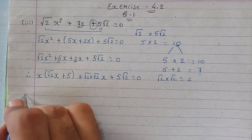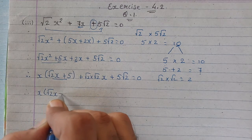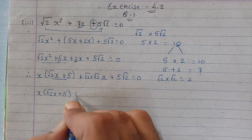Next, x will remain as it is, this bracket will remain as it is: root 2 x plus 5. Since there's a plus sign here, plus will remain as it is.